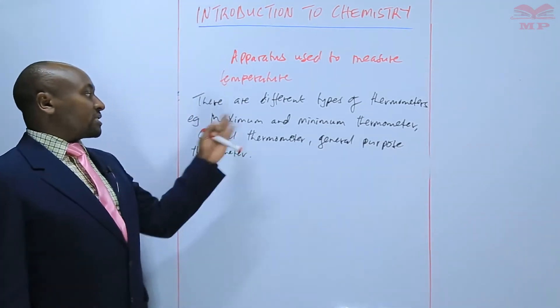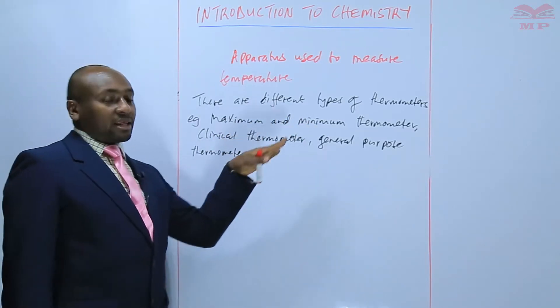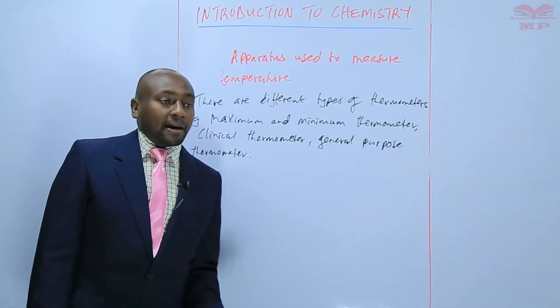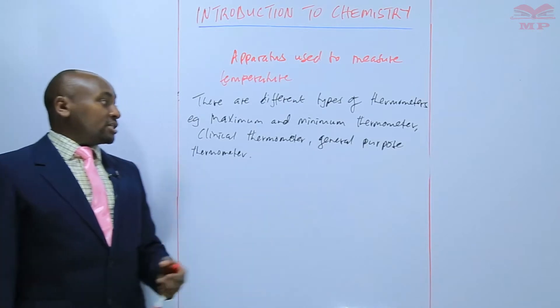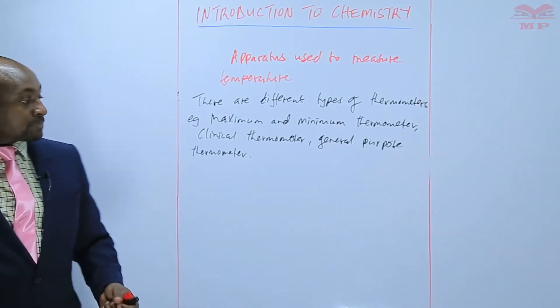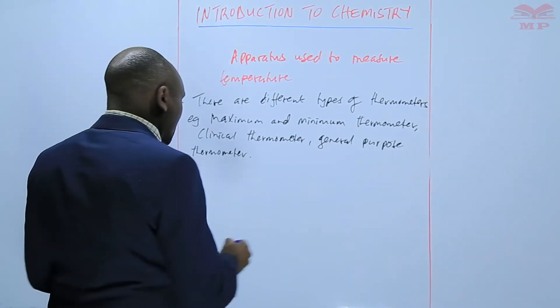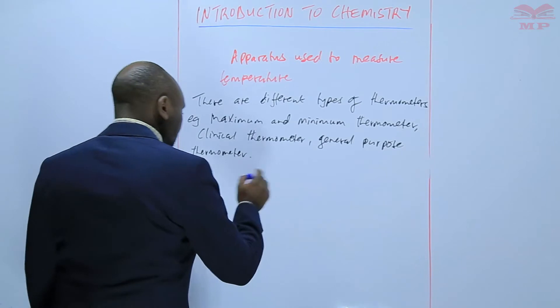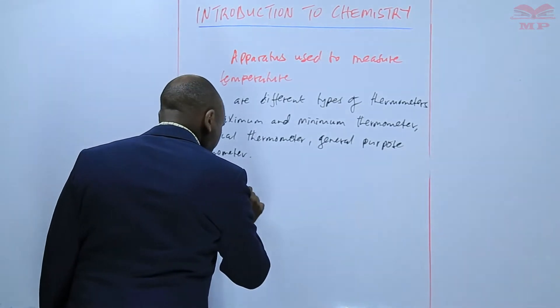The others have other areas where they are applied, but basically the most common thermometer used in chemistry is the general purpose thermometer, and it looks like this.